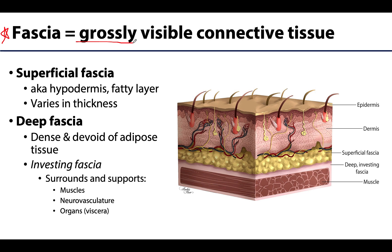Superficial fascia is just deep to the dermis and is more often referred to as the fatty layer, as you can see in this illustration. It often appears yellow and can have a brownish tint as well. It is called the fatty layer because it's composed of loose connective tissue and stored fat. It will also be highly vascularized with afferent nerves, and the thickness of this layer varies considerably based on location — think about the difference between the neck region and the abdomen — as well as individual differences. Most typically in a dissection we will ask you to reflect and remove this layer with the skin in order to best see deeper structures.